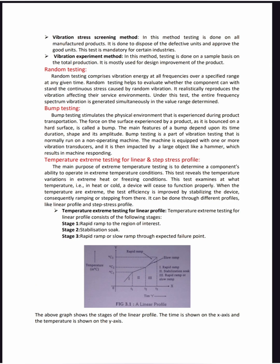The first method is the vibration stress screening method. In this method, all the manufactured products are put under test. It is done to identify faulty units and approve good ones. This test is mandatory in certain industries. The second method is the vibration experiment method, which is used for sample products like mobile phones.